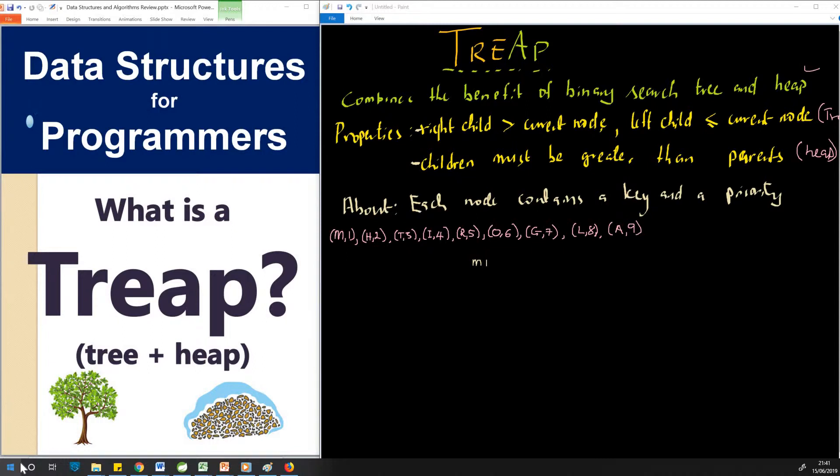This is one of the series of data structures for programmers, and we are going to be talking about Treap. A Treap is a data structure that combines the benefit of a binary search tree and the heap, and that is why it derives the name Treap.